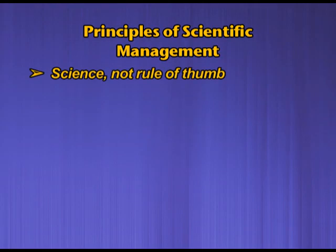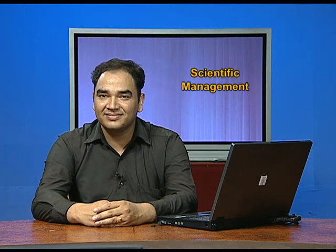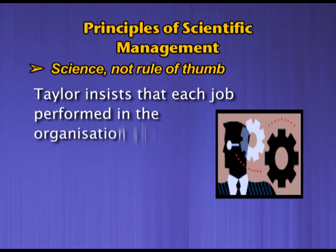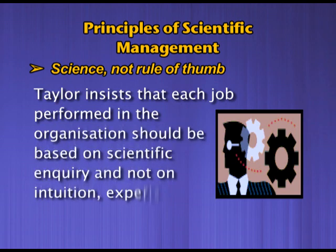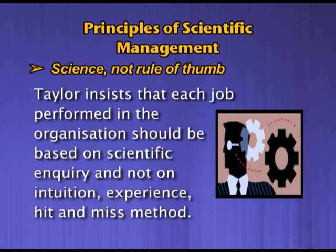The first principle of scientific management is science, not rule of thumb. This means no traditional methods will be followed in the organization. Old technology will be replaced with modern technology that brings efficiency and effectiveness and helps increase production. Taylor insisted that each job performed in the organization should be based on scientific inquiry and not on intuition, experience, or a hit-and-miss method.